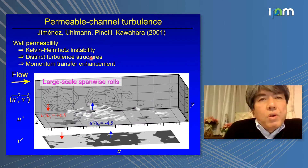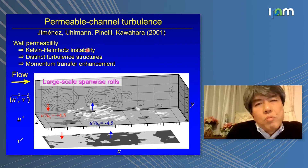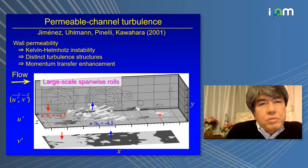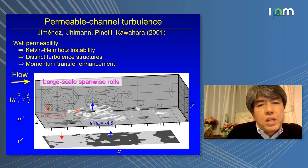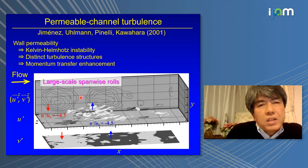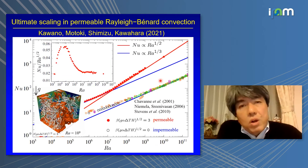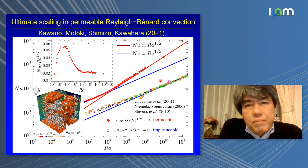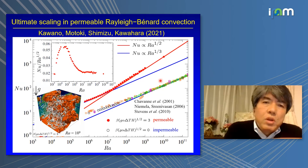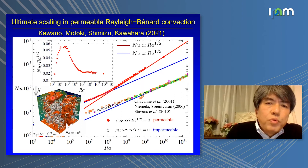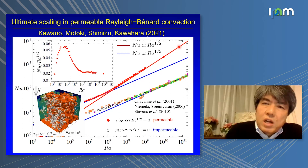Our prior research shows that Darcy-type simple wall permeability induces a Kelvin-Helmholtz instability in permeable channel flow. As a consequence of this instability, we see very large-scale spanwise rolls, which induce wall-normal fluctuation velocity to highly enhance momentum transfer. CF in the permeable case is much larger than in the impermeable case. We therefore introduced this Darcy-type permeability into Rayleigh-Bénard convection and observed very large-scale thermal plumes and ultimate scaling at higher Rayleigh number.